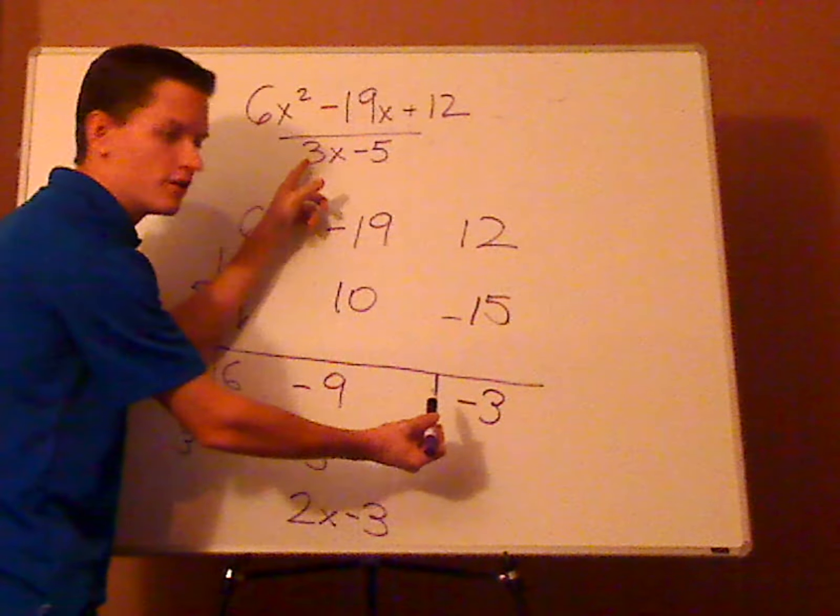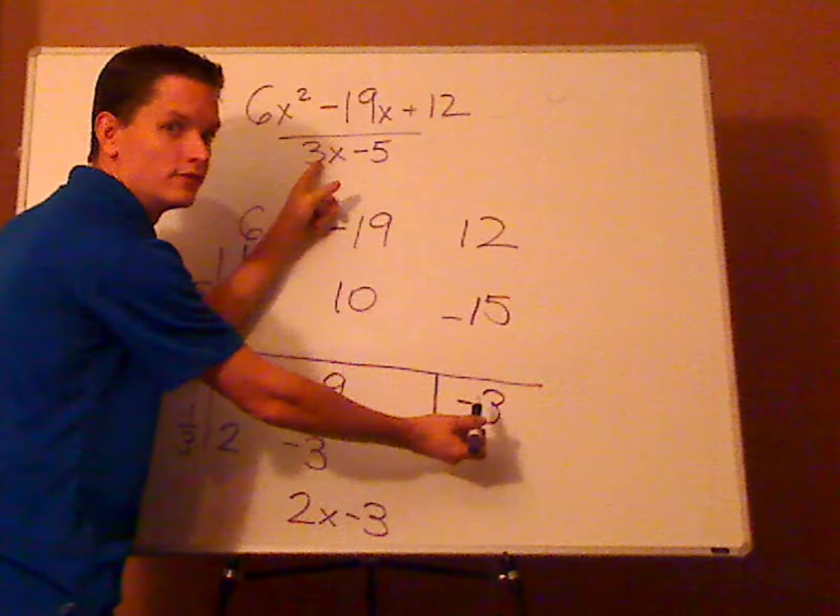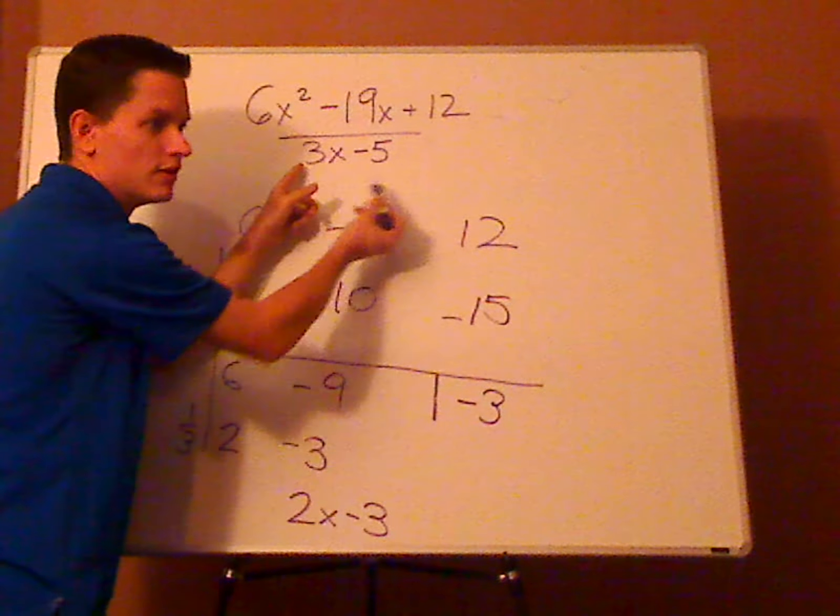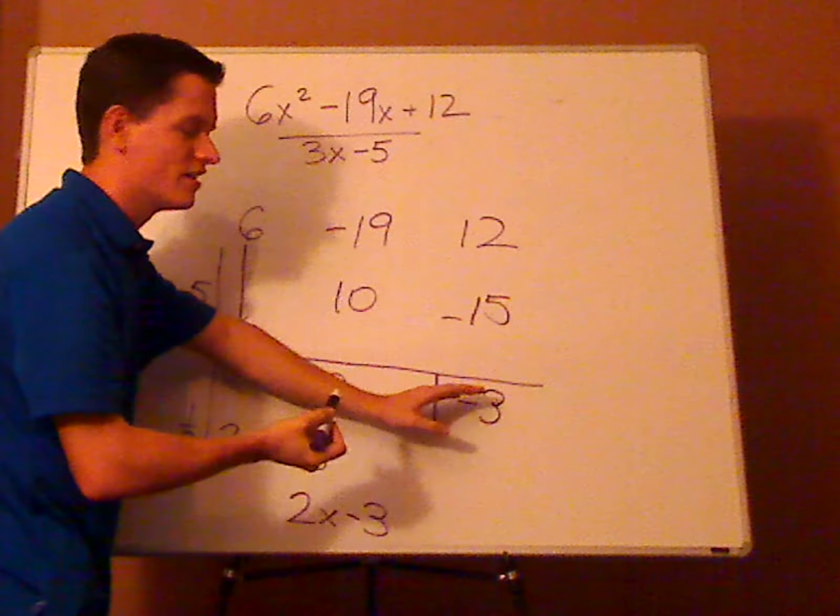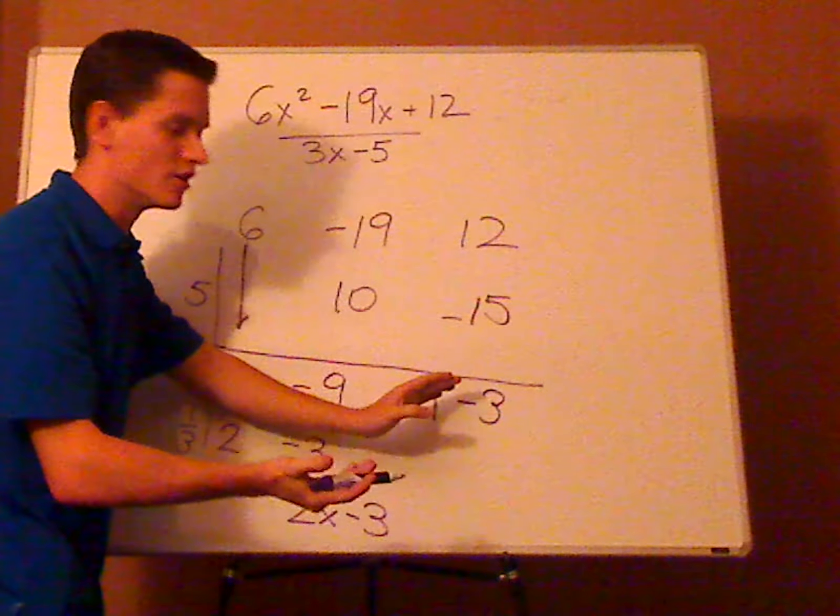It always starts in a sequence that's 1 less than the degree of your divisor. So here has a degree of 1. So here it's just going to be the constant, which is the degree of 0.